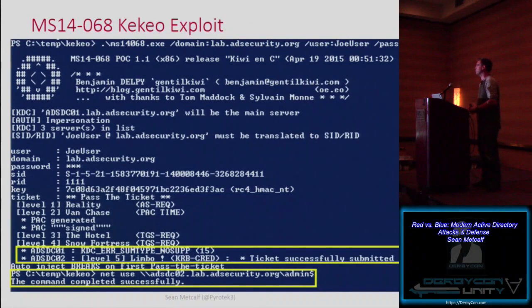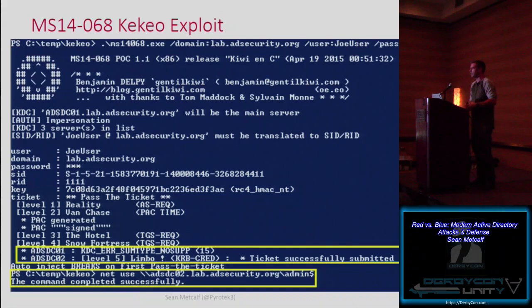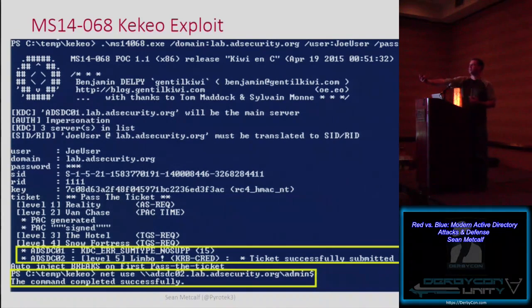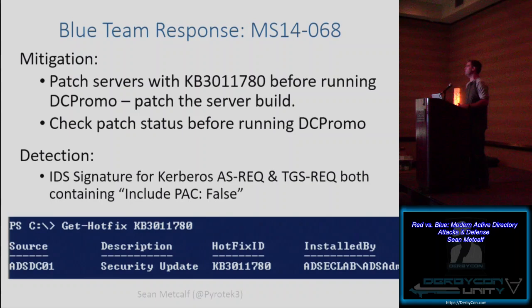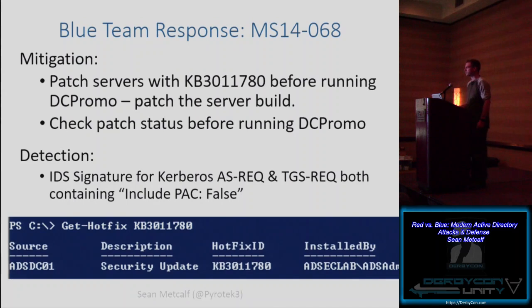Earlier this year Benjamin Delpy released a tool in his Kekeo toolkit that took this further. With PyKEK you had to know which DC was vulnerable. Delpy's tool scans and finds a vulnerable DC, exploits it for the MS14-068 golden ticket, then requests a delegation ticket that works across all DCs — even patched ones. The mitigation is straightforward: patch your domain controllers, make sure server builds include this patch before running DC Promo, and create an IDS signature looking for Kerberos AS and TGS requests with include-PAC set to false.